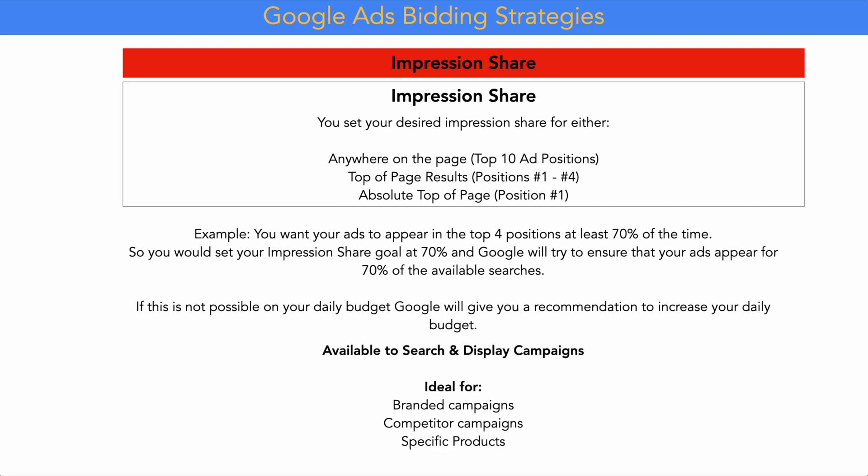This bidding strategy is available for both search and display campaigns and is ideal for branded campaigns, competitor campaigns, or specific product campaigns. For branded campaigns, if a competitor is bidding on your brand term and you see a drop in conversions, you can set up a branded campaign targeting only branded keywords with an impression share goal of 90%, appearing in the top position 90% of the time — which can be very effective at stopping competitors from exploiting your branded keywords.